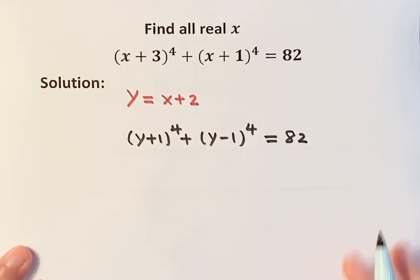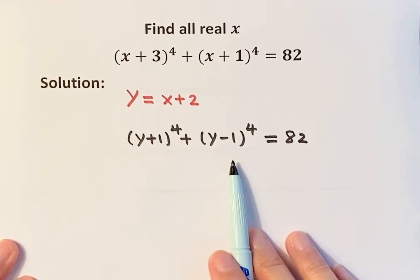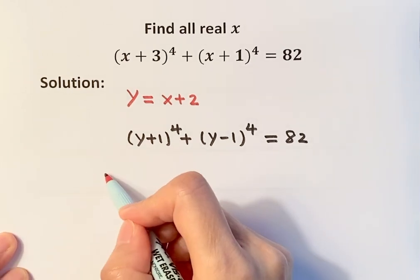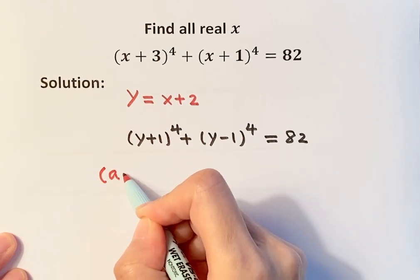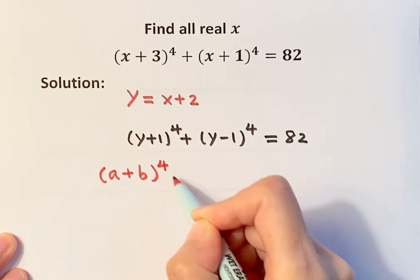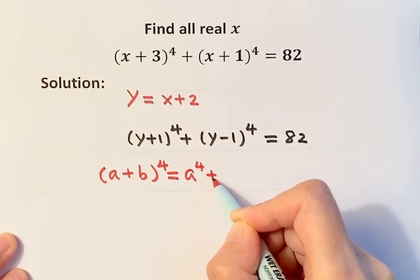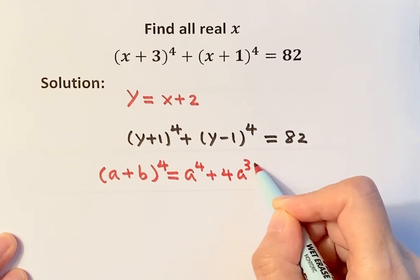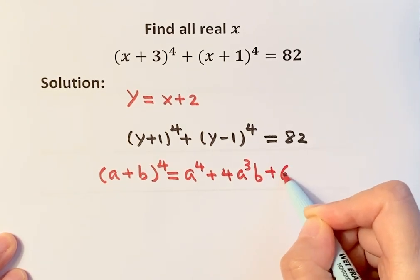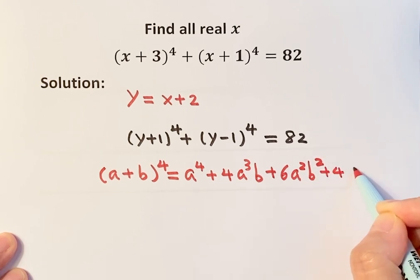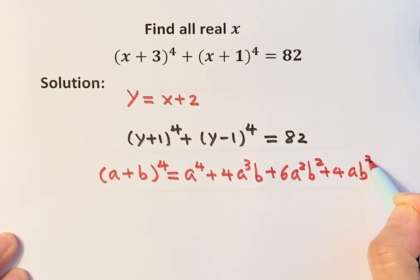I'm going to expand these two terms using the Binomial theorem. Here's the formula: (a+b)⁴ = a⁴ + 4a³b + 6a²b² + 4ab³ + b⁴.